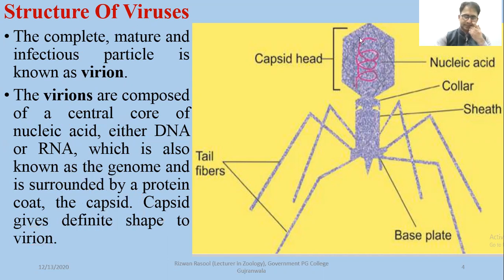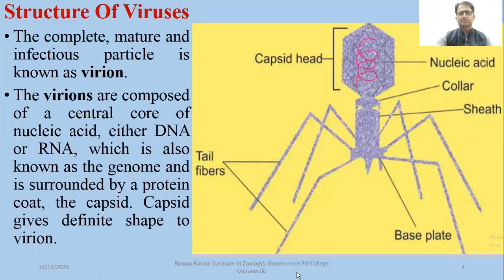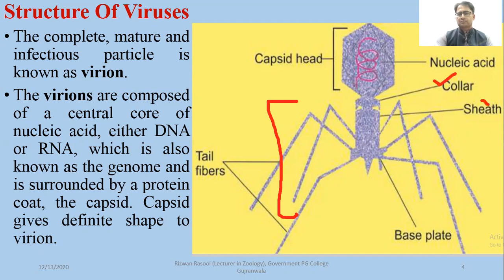If you look at any of the bacteriophage viruses, the tail shows a more complex structure as compared to the head portion. In the case of the head and tail junction, the structure is called the collar. It is covered by a protein sheath. There is also a central protein in it, known as the core protein, which is the core of the virus.